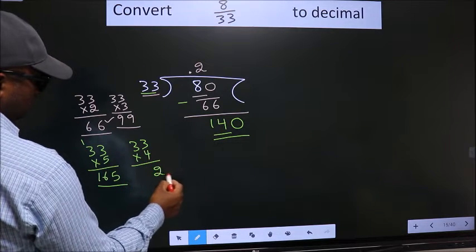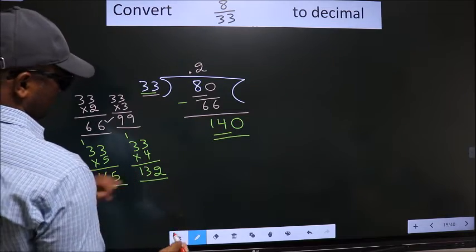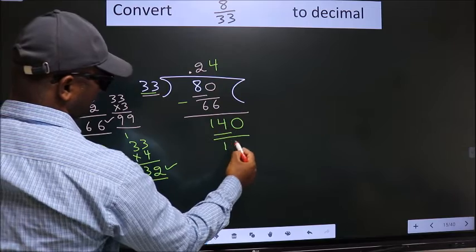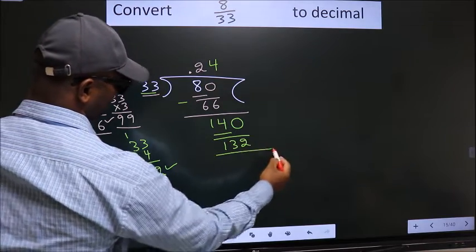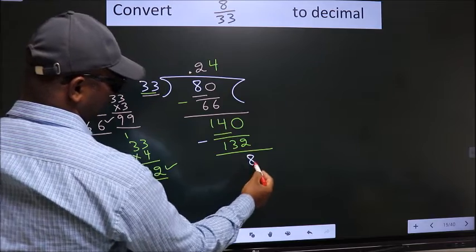4 times 3 is 12, 4 times 3 is 12 plus 1 equals 13. So we take 132. That is 4 times 33 equals 132. Now we subtract and get 8.